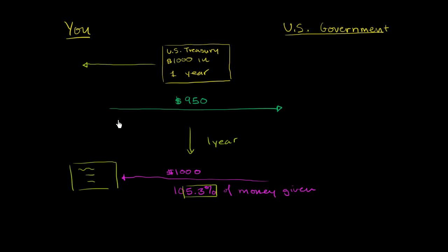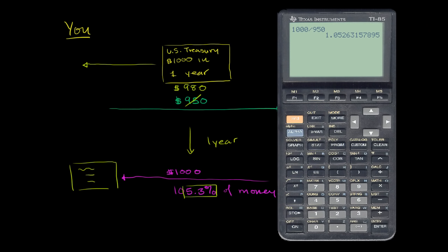So you could imagine, if all of a sudden many people want to buy this government security, and now the price goes up, instead of being $950, let's imagine that it is now $980, what is the implicit yield that the person would now get on it? Well, we get the calculator back out here.